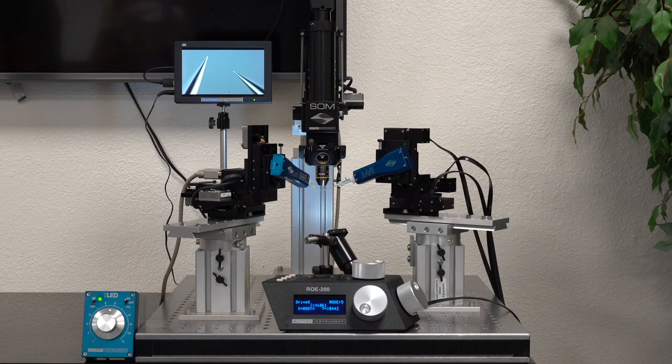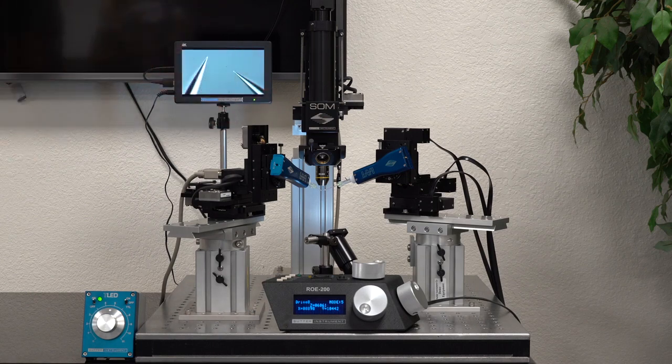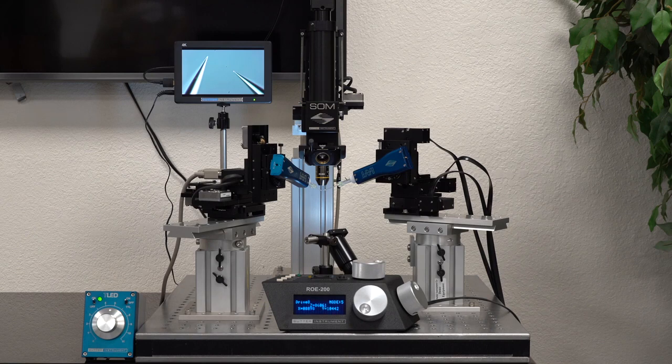The fluorescent excitation port is on the left side of the microscope, here. A light source can be attached with either C-mount threading or 30mm cage components.